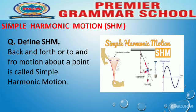Let's talk about its definition. Define simple harmonic motion: back and forth or to and fro motion about a point is called simple harmonic motion. SHM is basically an abbreviation — the shorter form of simple harmonic motion. یہ وہ motion ہوتی ہے جس میں ایک body فارورڈ اور پھر بیک ورڈ موف کرے، مطلب ایک ہی پوائنٹ کے آگے اور پیچھے movement کرے۔